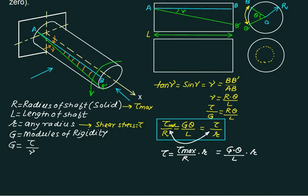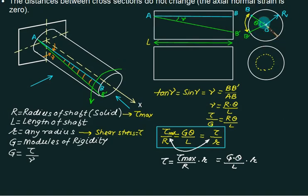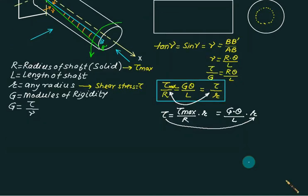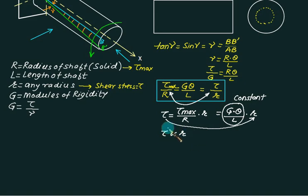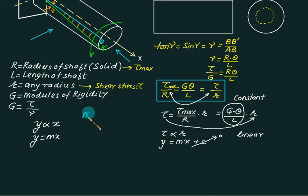G is the modulus of rigidity, theta is the angle of deformation — which for r equal to zero, r equal to any value, or r equal to capital R is always constant — and L is the length of shaft. It clearly indicates that tau is a function of only r. Therefore tau divided by r equals tau max divided by R is constant, meaning tau is proportional to r. If r increases, tau also increases. This distribution is the same as a straight-line distribution, similar to bending stress where sigma is proportional to Y.